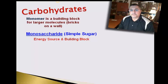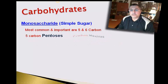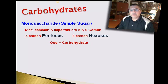Monosaccharides typically contain anywhere from three to seven carbon molecules that form in chains or ring structures. The most important monosaccharides are our pentoses and hexoses. Anytime you see the suffix '-ose' on a word in this course, it's going to be associated with a carbohydrate. 'Pento-' means five carbon; 'hexo-' means six carbon.